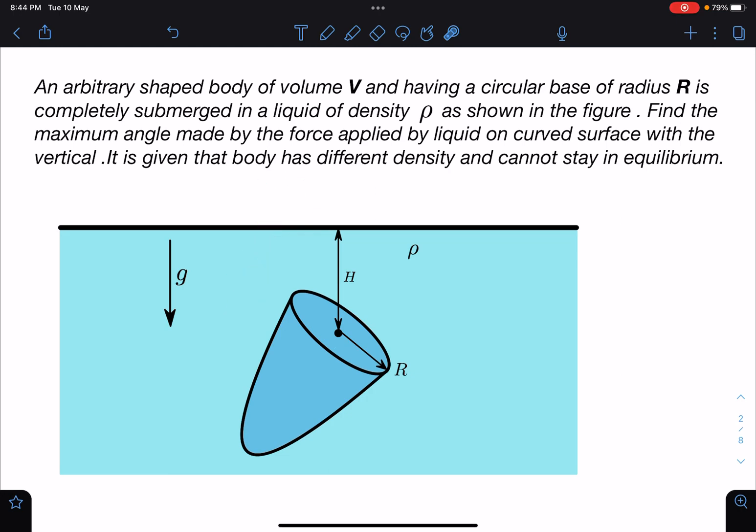It is given that the body has different density and cannot stay in equilibrium. So it is just random body. I am not keeping it in equilibrium because in that case ρ liquid and ρ solid will become equal but this result does not depend on the densities. Let us discuss the concept part here.